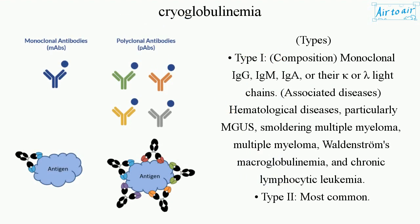Type I — Composition: monoclonal IgM, IgA, or their kappa or lambda light chains. Associated diseases: hematological diseases, particularly MGUS, smoldering multiple myeloma, multiple myeloma, Waldenström's macroglobulinemia, and chronic lymphocytic leukemia.